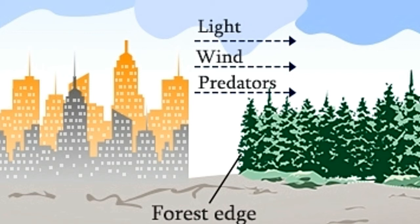A hedge of light-tolerating bushes can be grown at the forest edge to shield it from windfall, debris, and sunlight. Creating feathered edges, where the number of trees reduces gradually at the edge rather than an abrupt clearing, helps to prevent drastic climate changes.